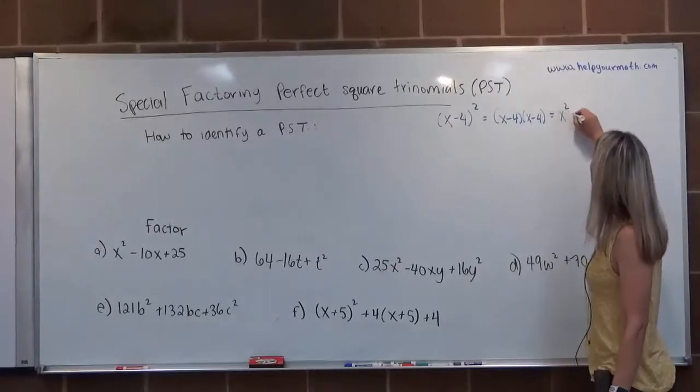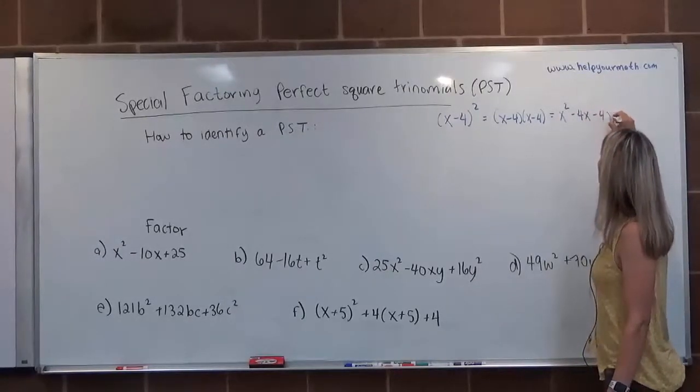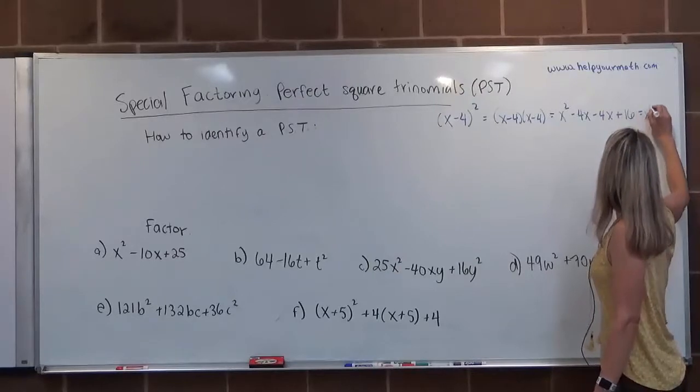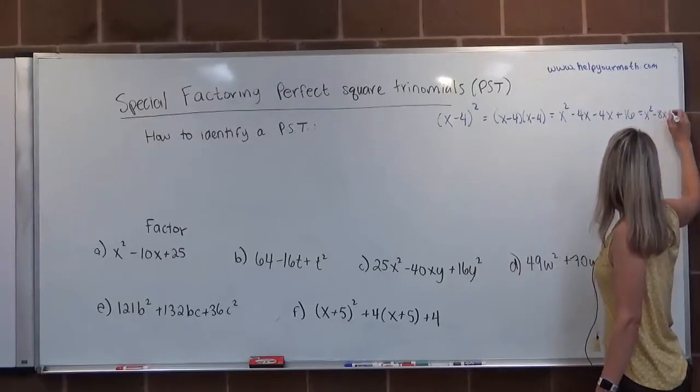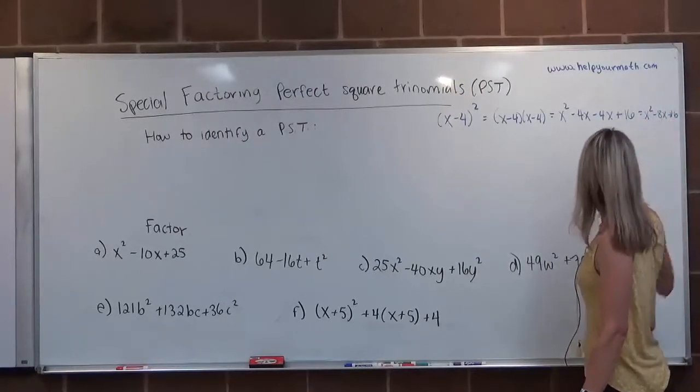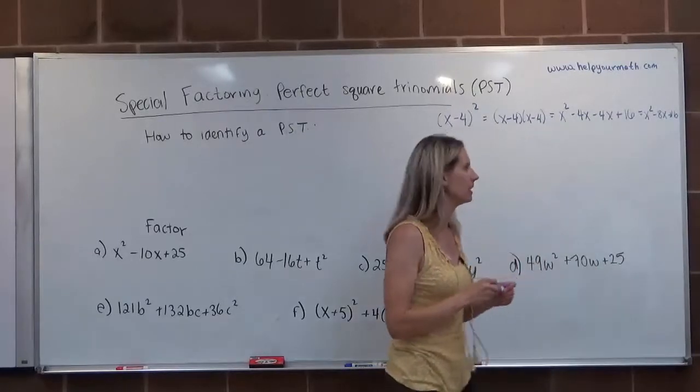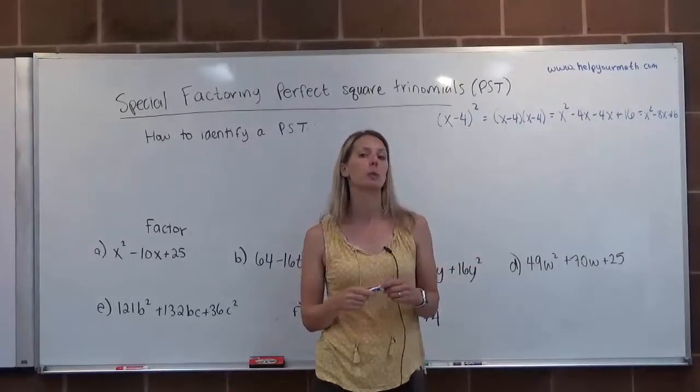So this would be x squared minus 4x minus 4x plus 16, which would be x squared minus 8x plus 16. This x squared minus 8x plus 16, that would be an example of a perfect square trinomial.